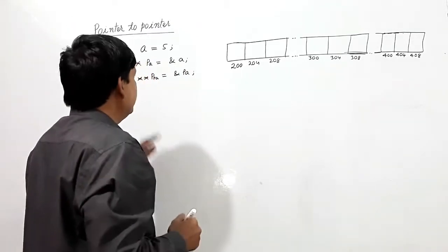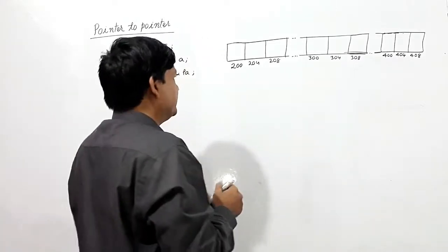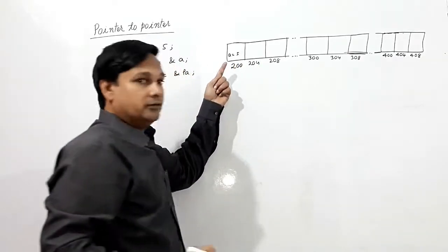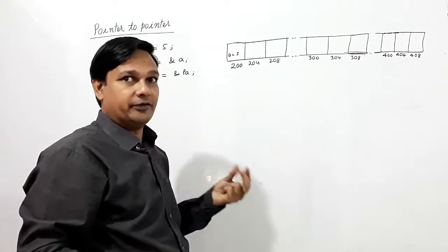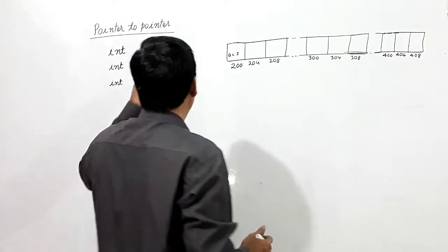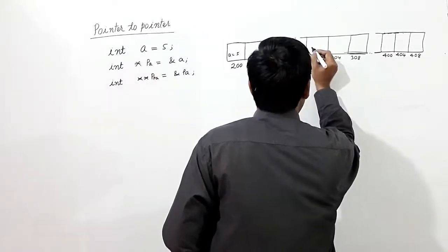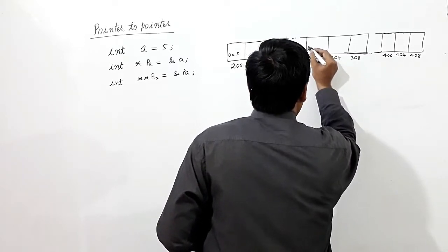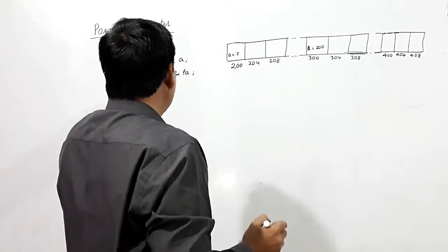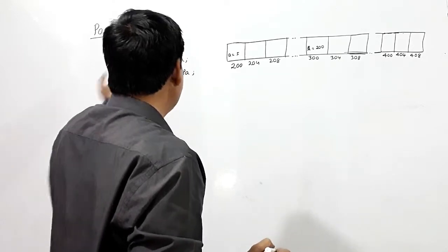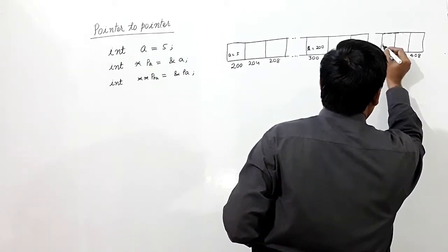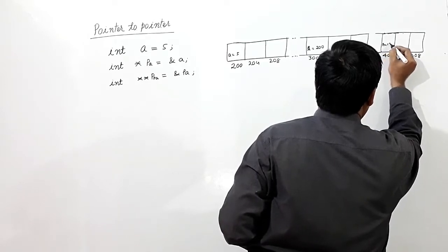I am assuming the value of 'a' is assigned address 200, so 'a' is equal to 5. 'a' is a variable holding value 5. Pointer 'pa' is holding the address of 'a' — I am assuming 'pa' is at address 300, which is holding address 200. And pointer-to-pointer 'ppa' is holding the address of 'pa', so 'ppa' is equal to 300, placed at address 400.